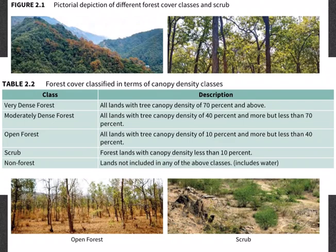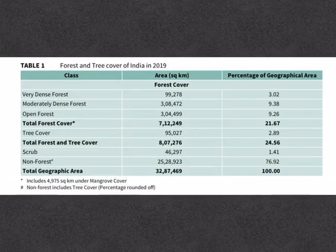Here is a quick recap: all lands with tree canopy density of 70% and above are termed as dense forests. If the canopy density is between 40% and 70%, they are called moderately dense forests. If the tree canopy density is between 10% and 40%, they are called open forests. Anything less than 10% is called scrub, and any land not falling under these four categories is termed as non-forest — these include ponds, lakes, rivers, etc.